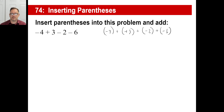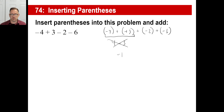So let's actually add this together. These are opposite signs, so we're going to take the absolute values — which are four and three — and subtract them. So that's four minus three, and that'll give us a one. Now, is that a positive one or a negative one? We look — that's farther away from zero. It's a negative. So there's my negative one.